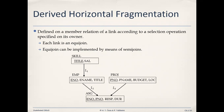Today our session is regarding derived horizontal fragmentation. As we have discussed, there are two types of horizontal fragmentation: one is called primary horizontal fragmentation, which we discussed in the last lecture, and the second type is called derived horizontal fragmentation, in short DHF. DHF is defined on a member relation of a link according to a selection operation specified on its owner. In DHF we look at the relationships between various relations in the form of a link, which is the relationship between two relations.